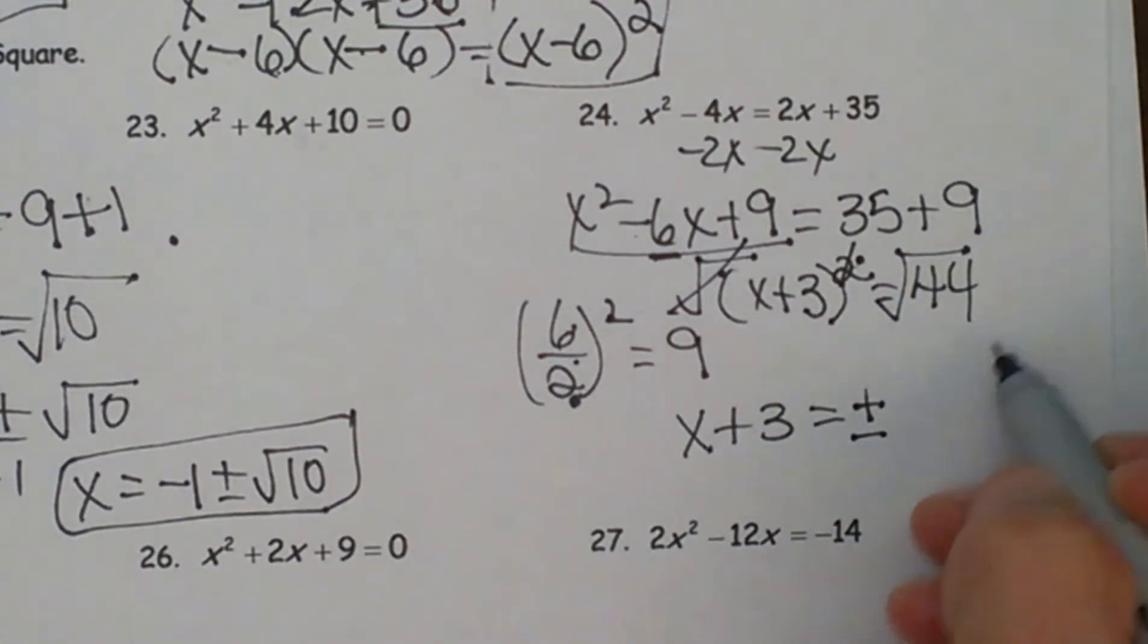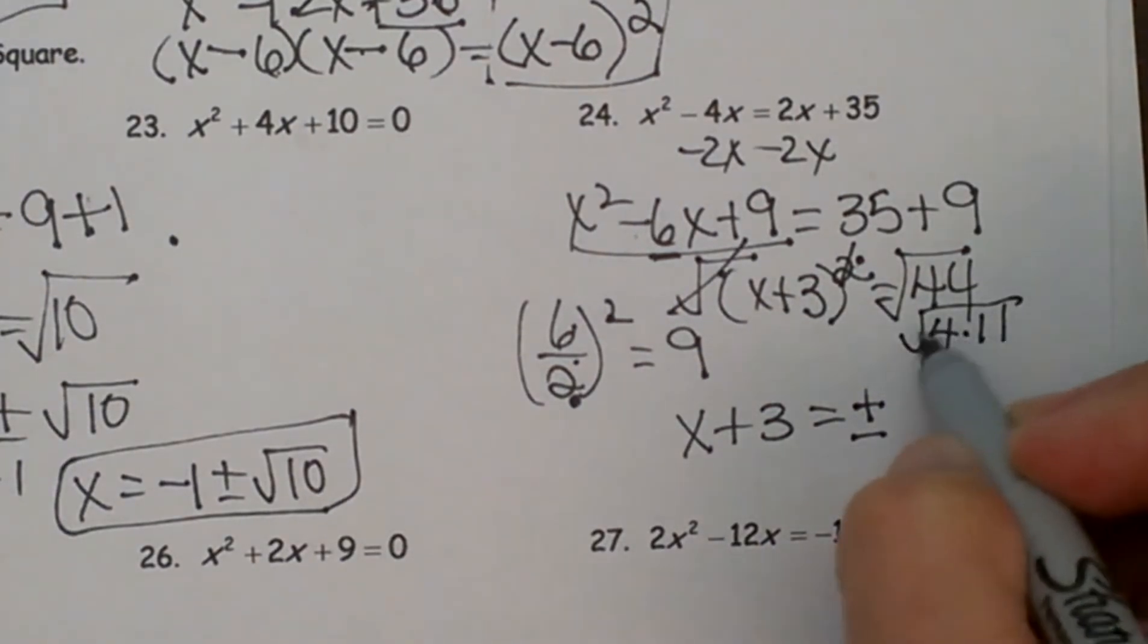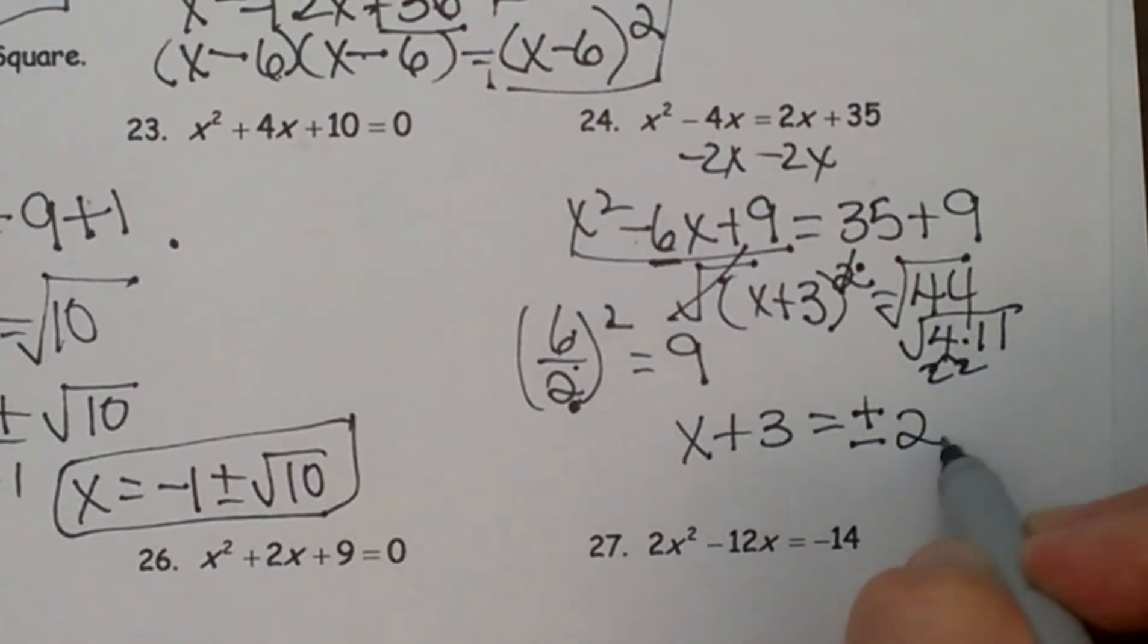And then the square root of 44 is 4 times 11, and we know that we can bring a 2 out of this because 4 is a perfect square, so 2 root 11.